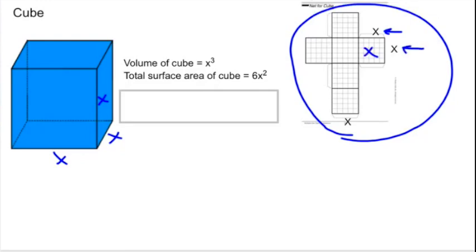X times X gives you X squared. And how many of them are there? Six of them. So that's going to give you a total surface area of 6X squared.